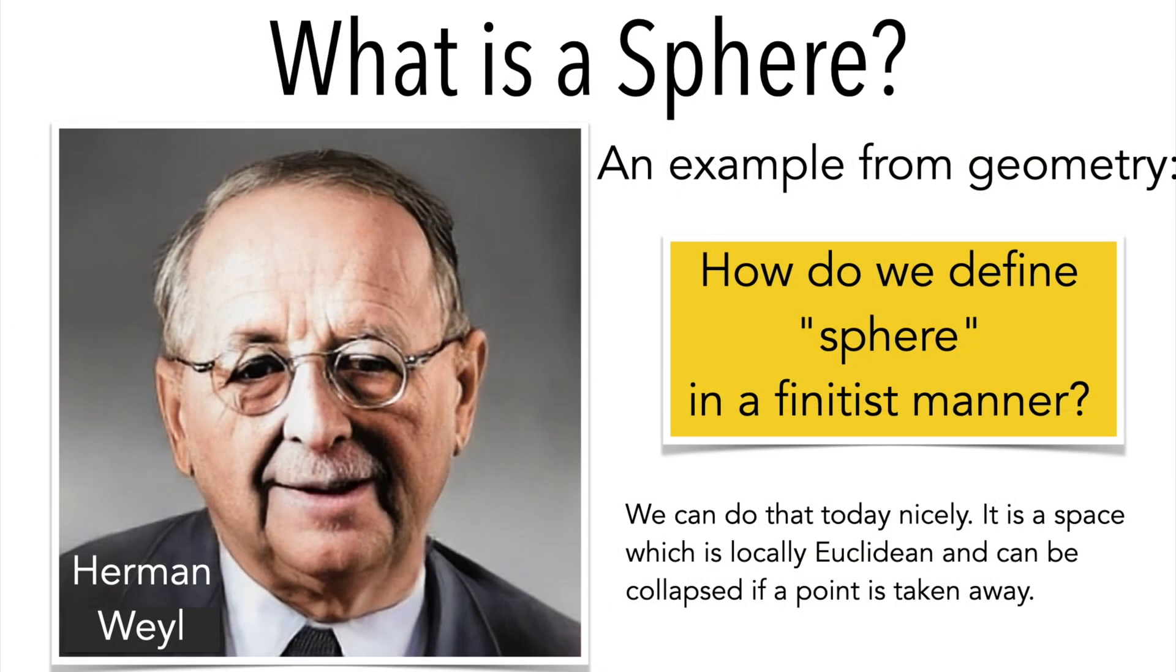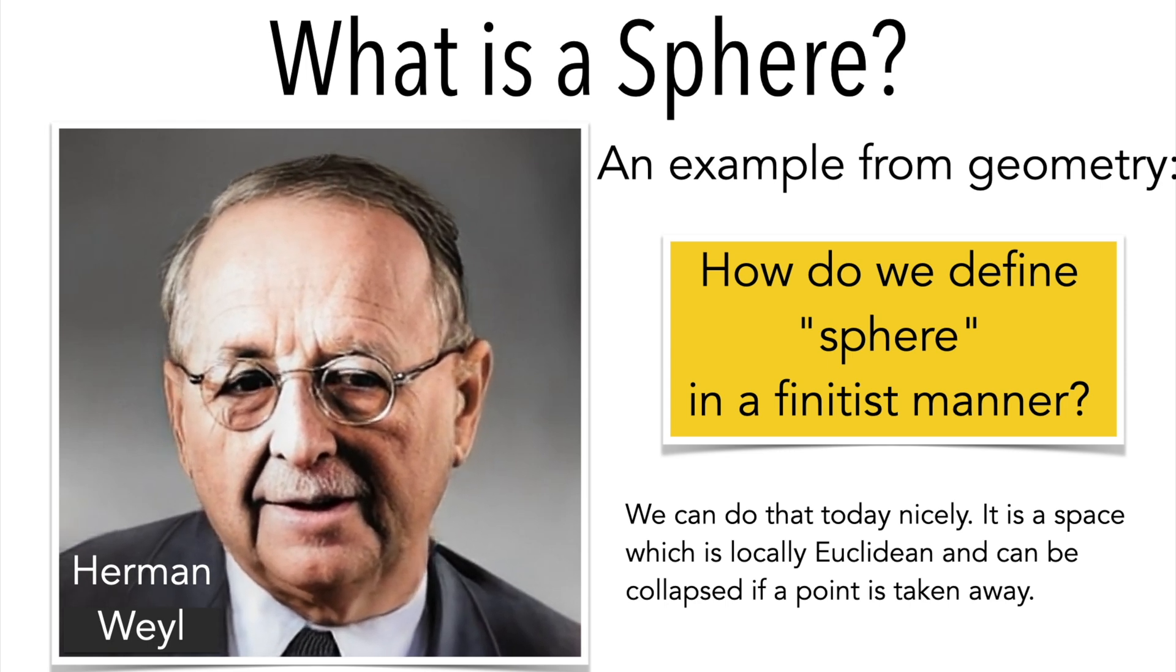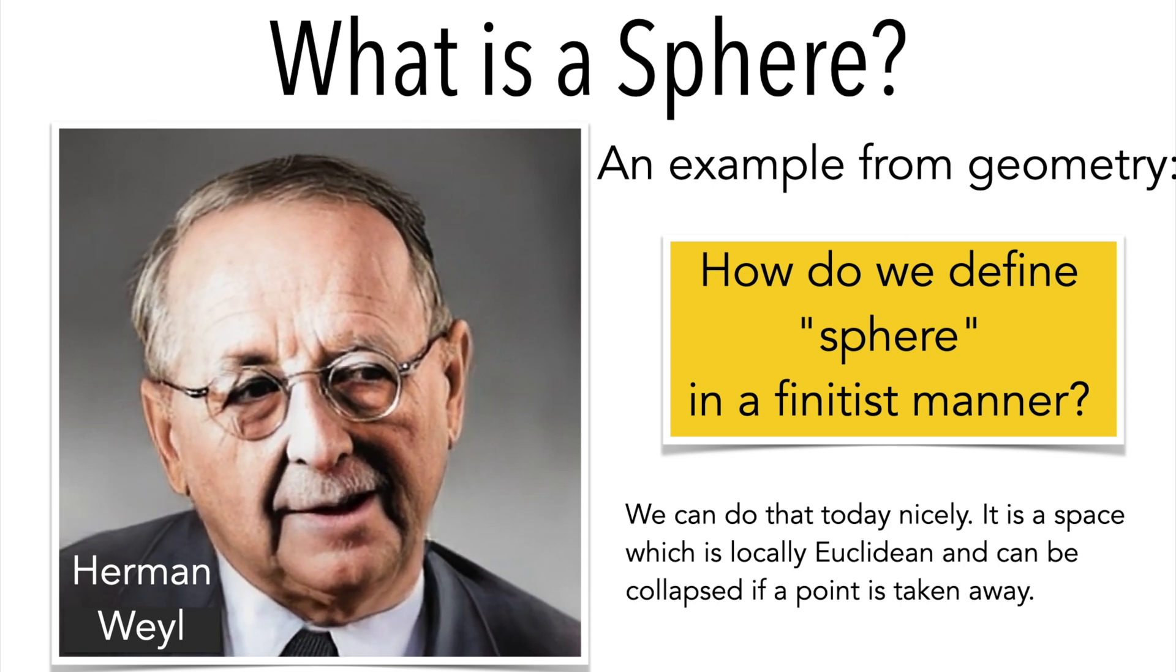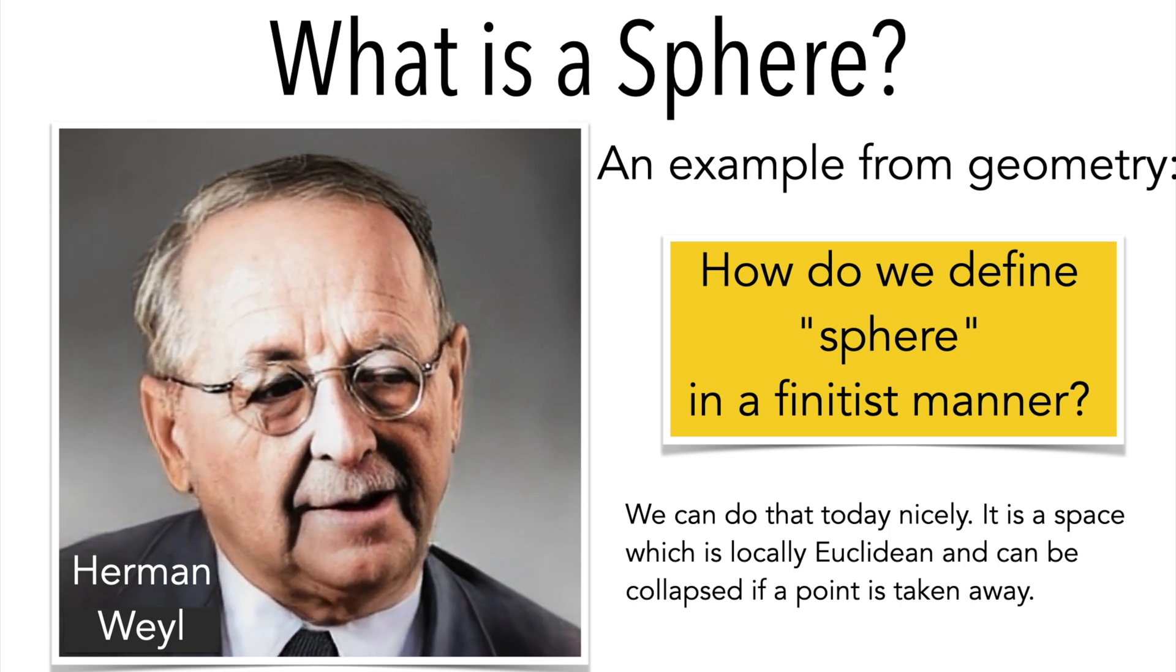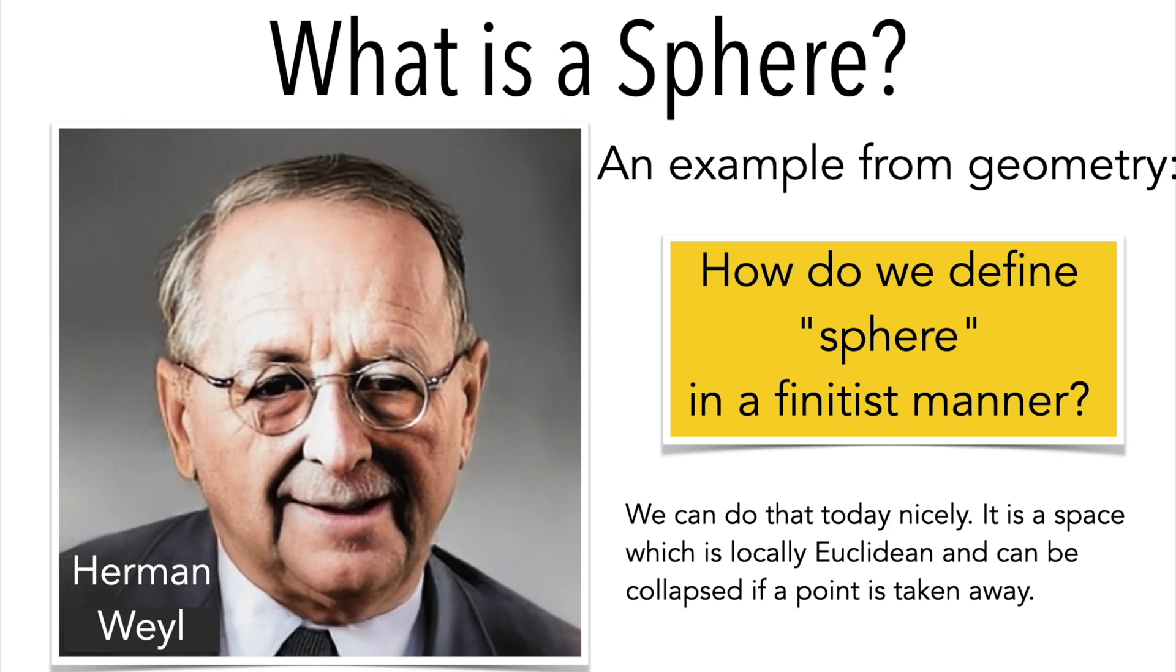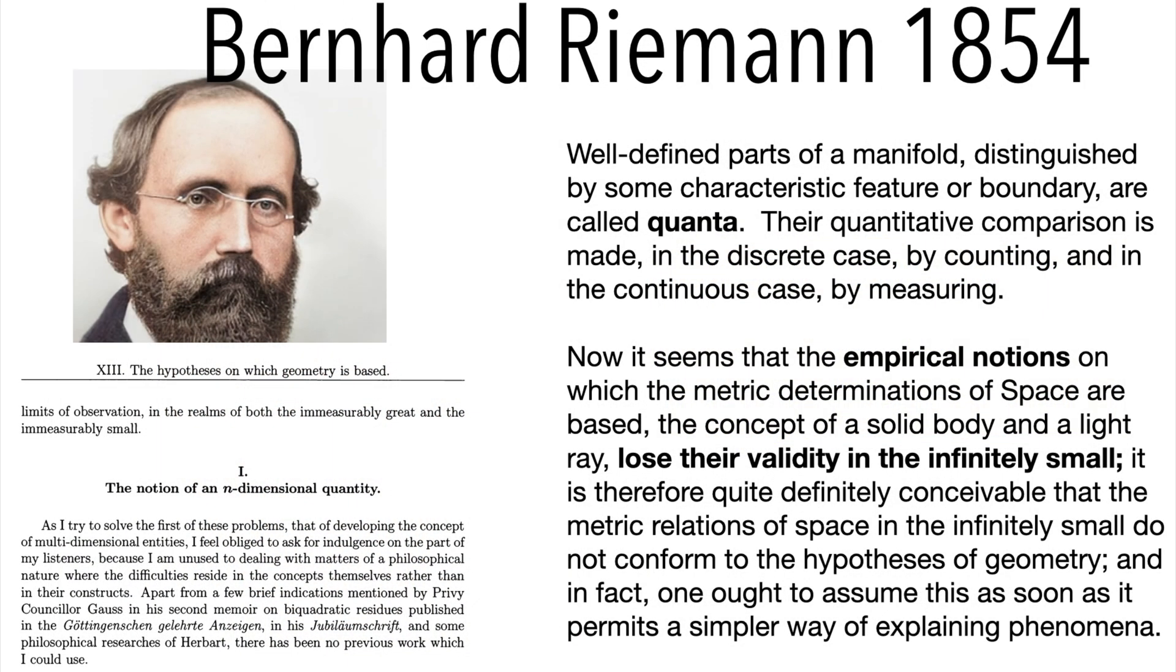How can we define what a sphere is? Today we can do that nicely in finite geometries or delta sets. It is a space which is locally Euclidean, meaning that unit spheres are spheres in a smaller dimension and can be collapsed if a point is taken away. The finite was addressed already in the paper of Riemann defining Riemannian manifolds, Riemann surfaces.